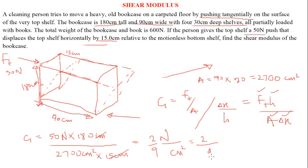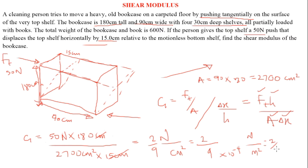Converting the centimeters squared to meters squared gives centimeters to the power of negative 2, which is exponential negative 4. So the expression can be simplified to 2 over 9, with 10 raised to the power of negative 4, in Newton per meter squared.